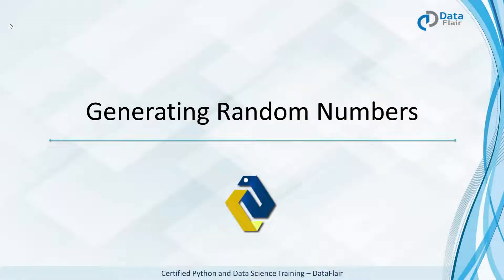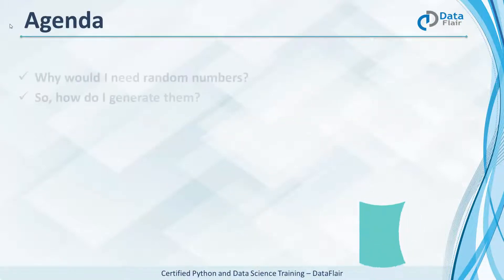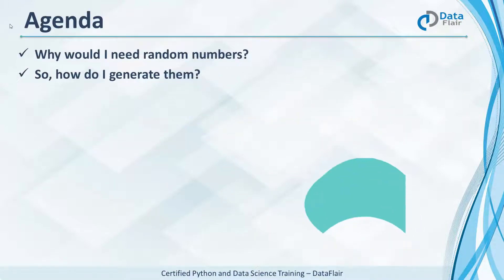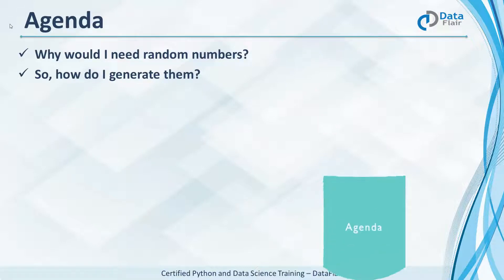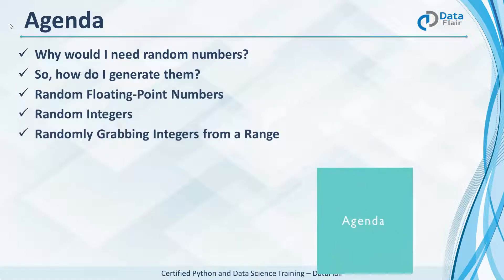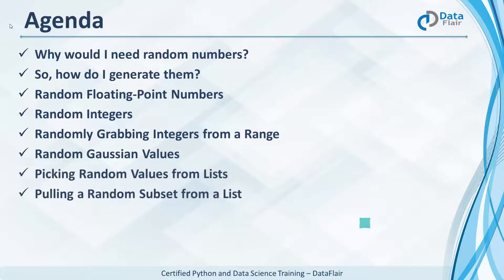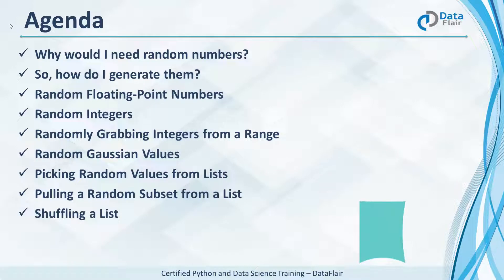Generating random numbers in Python. Why would I need random numbers and how do I generate them? We'll learn about random floats and integers, random Gaussian values, picking random values from lists, shuffling lists, and generating random numbers with NumPy.